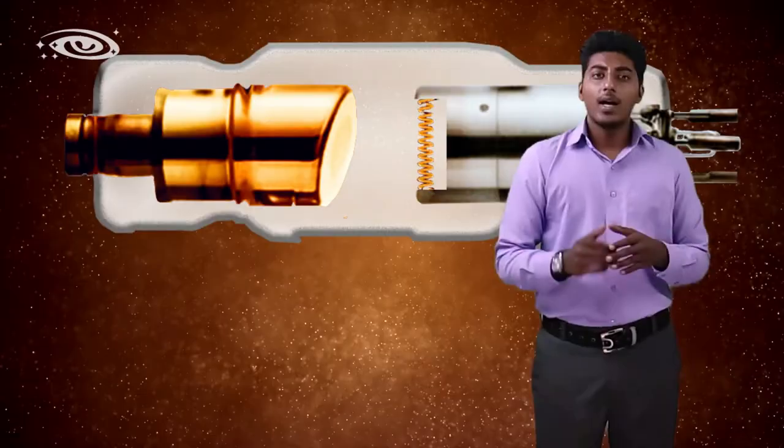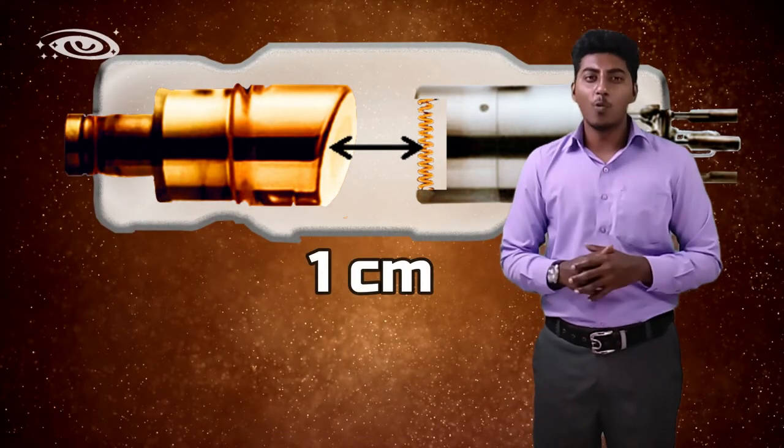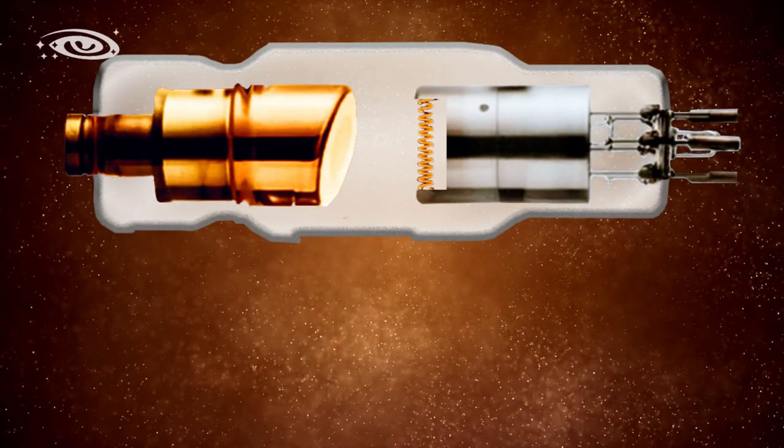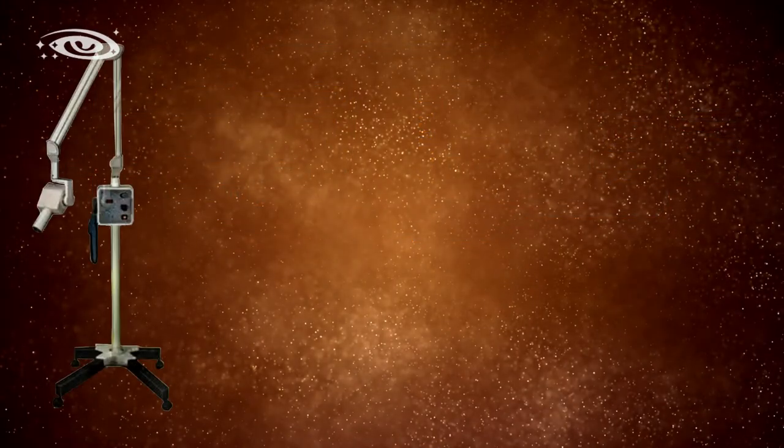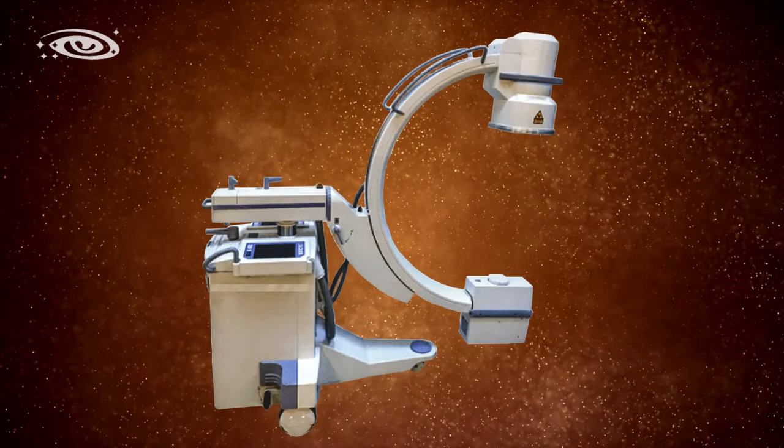The distance between the anode and cathode is maximum one centimeter. These stationary anode x-ray tubes are used in dental machines, portable and mobile machines, and C-arm machines.